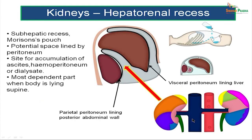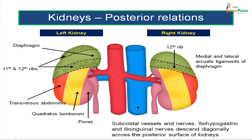We now come to the hepatorenal recess. The hepatorenal recess is a pouch of peritoneum present between the kidney and the liver. The parietal peritoneum lining the posterior abdominal wall covers the kidney from the front and then reflects back onto the liver as the visceral layer of peritoneum. Normally it does not contain fluid, but it is the site of accumulation for fluid in cases of ascites, hemoperitoneum, and dialysate. It is the most dependent part of the body when the body is lying supine, and any excess fluid in the peritoneal cavity will tend to accumulate here in the hepatorenal pouch.